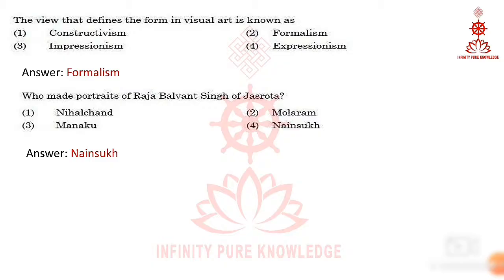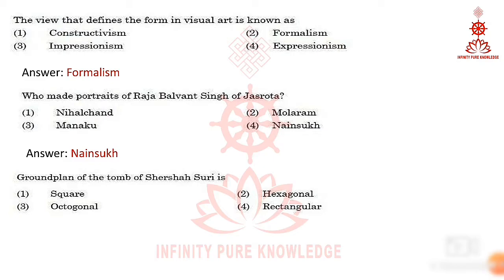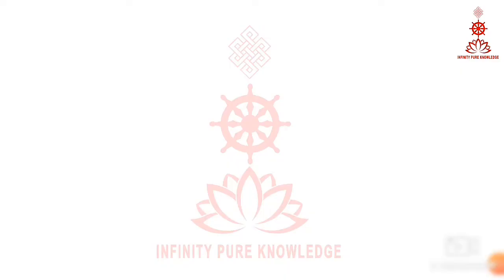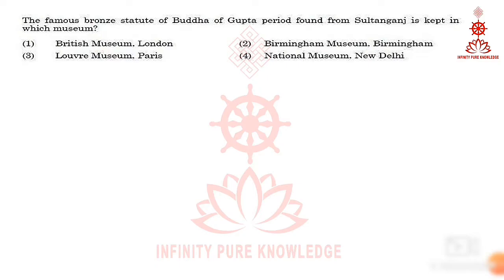Moving to the third question: the ground plan of the tomb of Sher Shah Suri is octagonal. The tomb of Sher Shah Suri is in the Sasaram town of Bihar state in India. The tomb was built in memory of Emperor Sher Shah Suri, a Pathan from Bihar who defeated the Mughal Empire and founded the Suri Empire in Northern India.